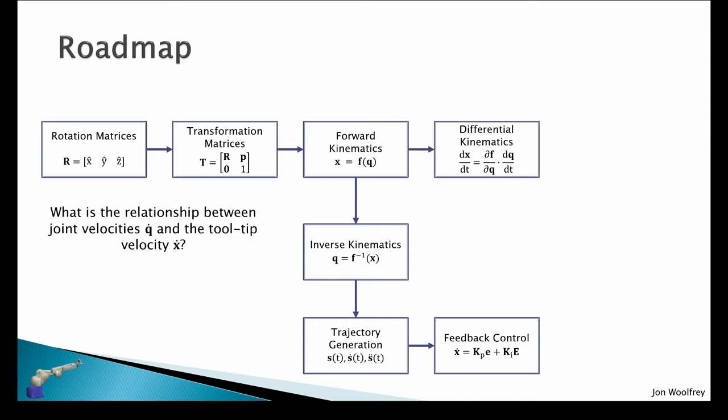From the forward kinematics we can use calculus to get the time derivative, and what we want to answer is what is the relationship between the joint velocities and the tooltip velocity of the robot. Then from differential kinematics we can control the tooltip of the robot directly, so this leads us again into trajectory generation and feedback control.